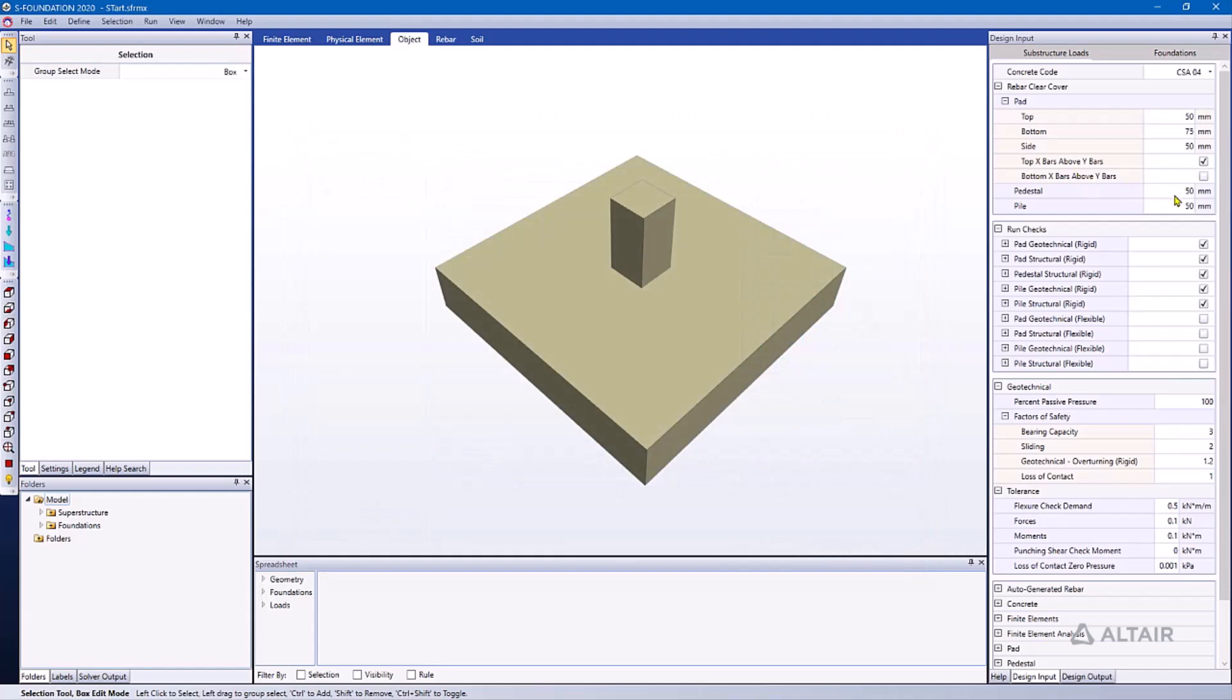And for this example that we're looking at, I have our top and bottom X bars dictated as so. I'm really just focused on the bottom bars. So right now we actually have our bottom Y bars above the X bars. This option is unchecked. And at the bottom, we also have 75 mm of concrete cover.